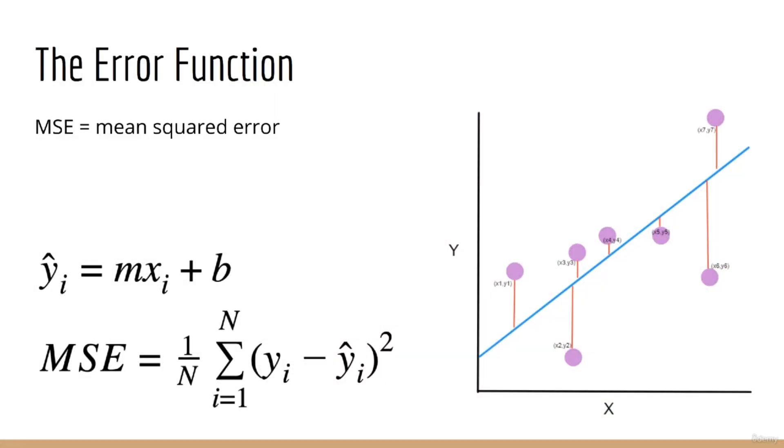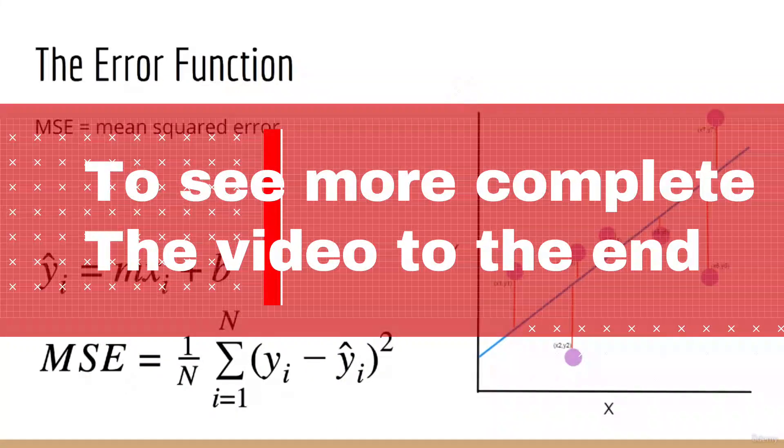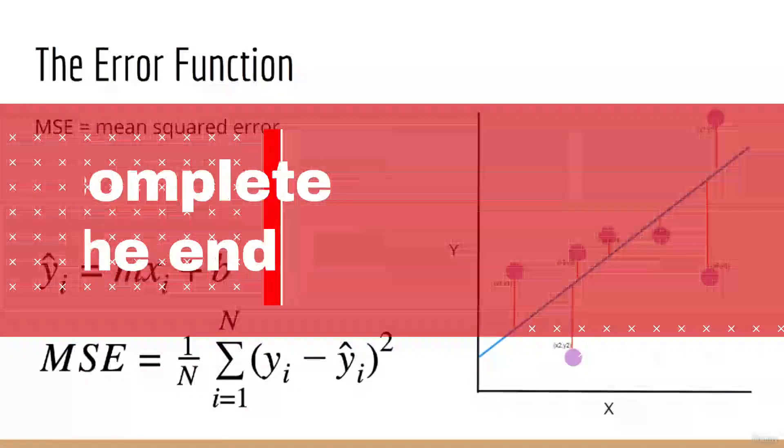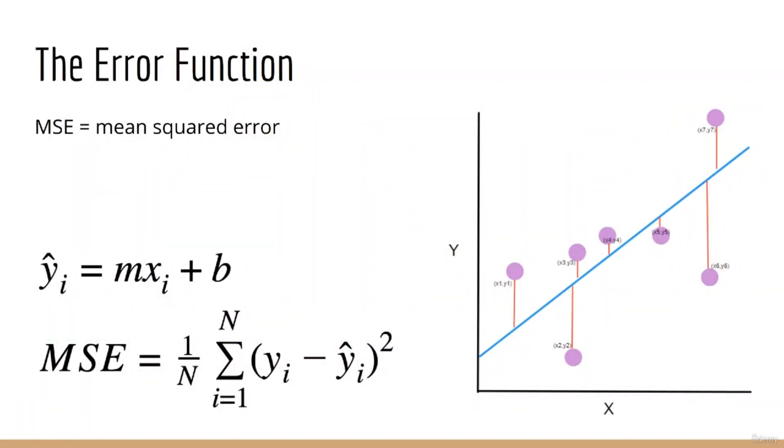xi and the target yi. We are going to calculate a prediction, y hat i equals m xi plus b. Then, we are going to take the square difference between yi and y hat i.